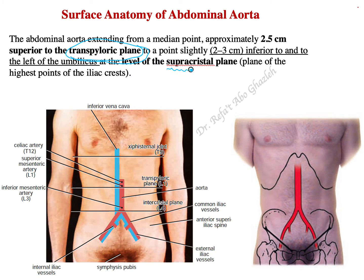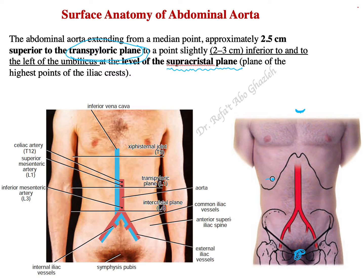To do this, we draw two planes. The first is the transpyloric plane and the second is the supracristal plane. There is a video on the planes of abdomen division you can watch. The suprasternal notch is at the upper border of the sternum — you can feel it. The transpyloric plane is the midway between the suprasternal notch and the symphysis pubis, and it lies at the level of L1.